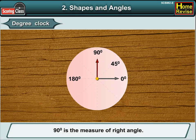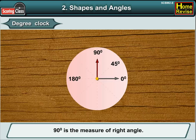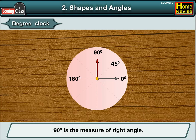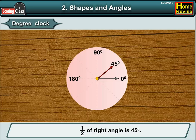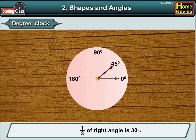Now 90 degrees is the measure of a right angle. So half of a right angle would be 45 degrees, and one third of a right angle is 30 degrees.